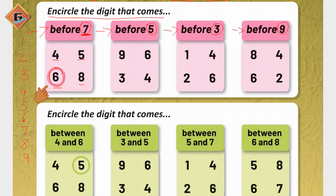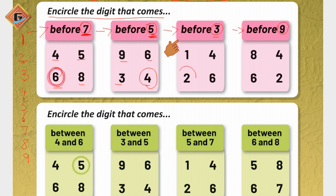Now we start with number five. We will see which digit comes before number five. Count with me: one, two, three, four, five. Before five comes four — four is present here, so we will circle it. After that, for number three — before three comes two, so we will circle two like this.